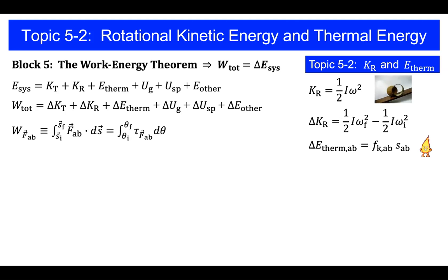Thermal energy can be created when two objects interact with each other via kinetic friction forces. And the change in the thermal energy of the system can be found by multiplying the magnitude of the kinetic friction force that exists between the two objects A and B by the corresponding displacement that the system undergoes while that kinetic friction force acts.